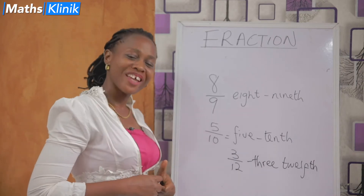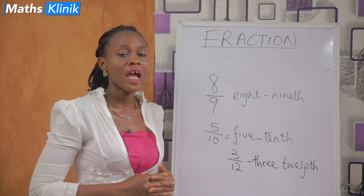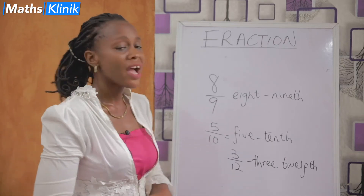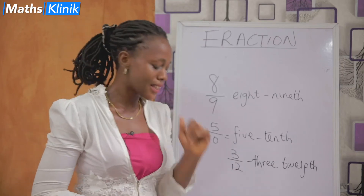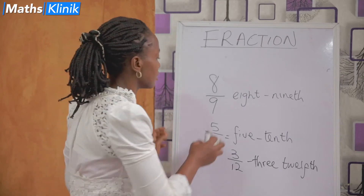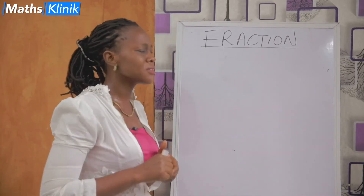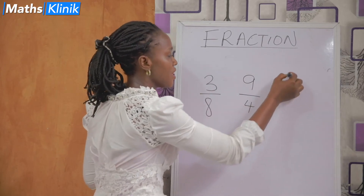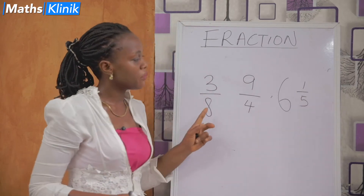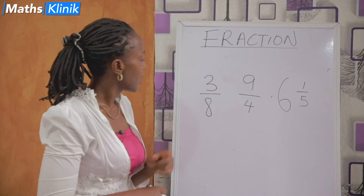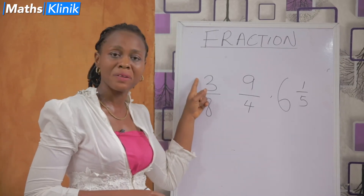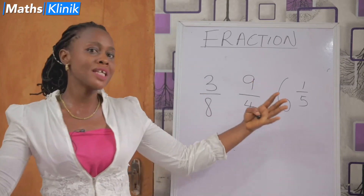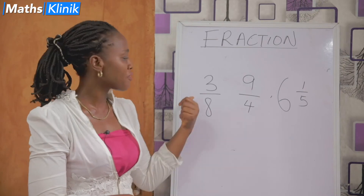Are we good to go? The next topic we're going to look at in fraction is the types of fraction. What are the types of fraction? We have three types. The first type is a proper fraction. Let's look at the following: we have three over eight, nine over four, and six whole number one over five. Looking at three over eight, the numerator is small while the denominator is big.